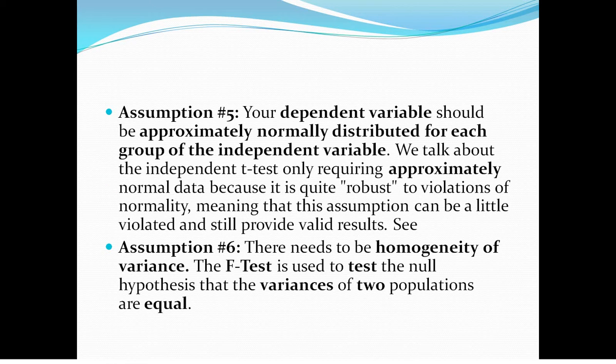Number five: your dependent variable should be normally distributed. I've done that test in Excel, a Kolmogorov-Smirnov test, but it only has to be roughly normal, doesn't have to be exactly normal. Number six: the variances of the two groups should be equal, and you can do that with an F-test.